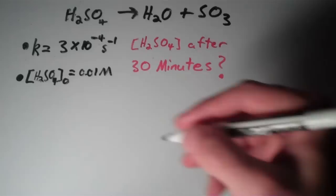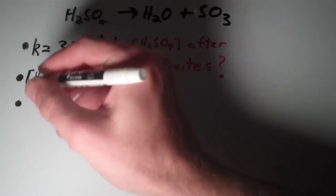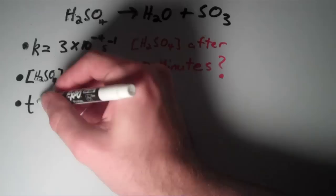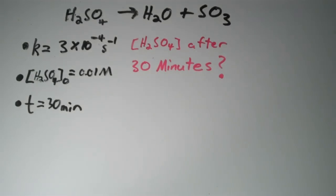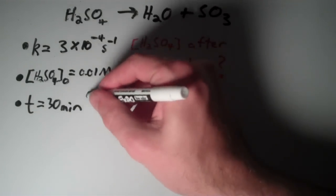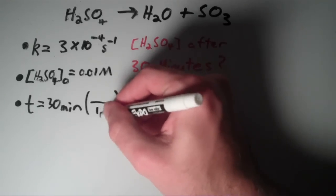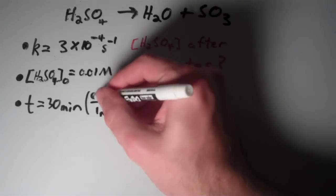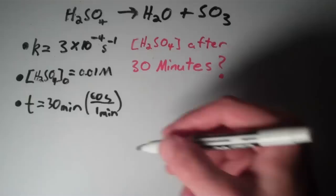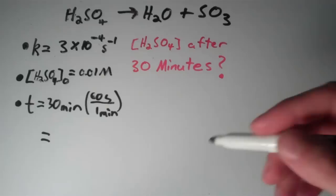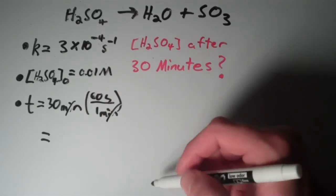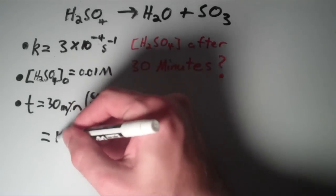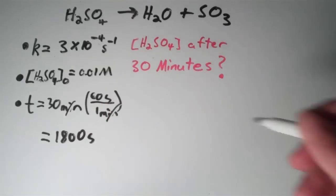Time is going to be equal to 30 minutes. Let's go ahead and convert that into seconds. There's one minute and there are 60 seconds in one minute, so our time in seconds is going to be 30 times 60, or 1800 seconds.